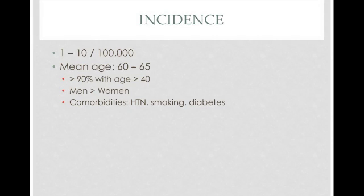The incidence is about 1 to 10 in 100,000. Mean age is about 60 to 65, and more than 90% of these people are over 40. It's more common in men compared to women, and a lot of these patients have comorbidities like hypertension, smoking, and diabetes — all of which are associated with a high chance of having plaques or a clot.